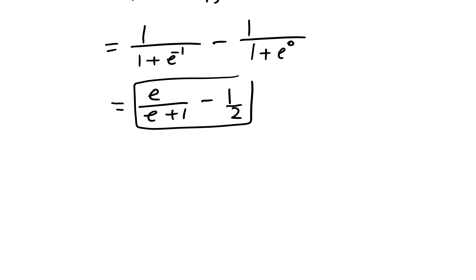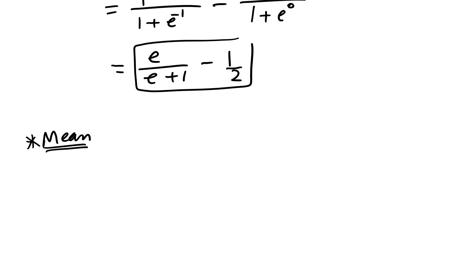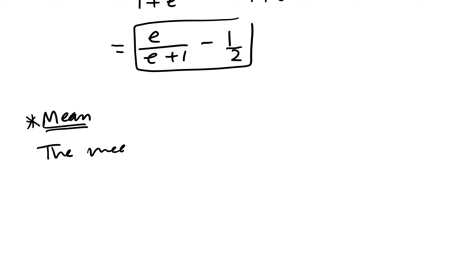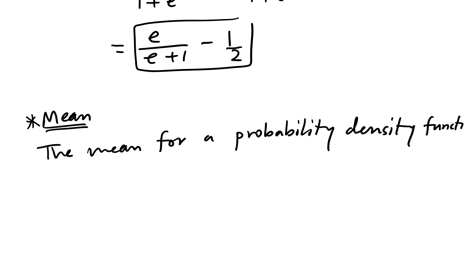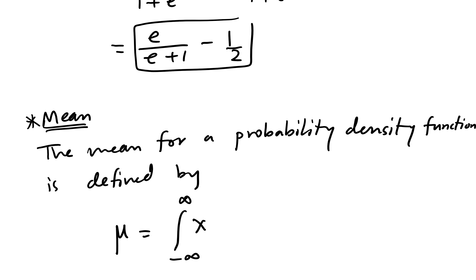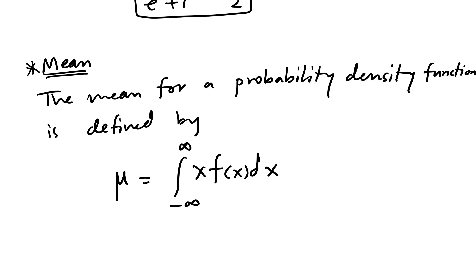Now let's talk about the mean. The mean for a probability density function is defined by mu equals the integral from negative infinity to infinity of x times f(x) dx. That's how we compute the mean using calculus.